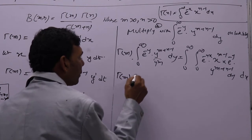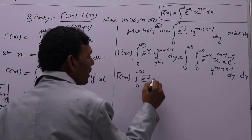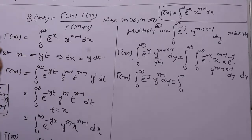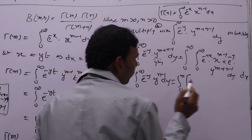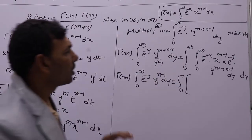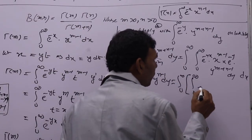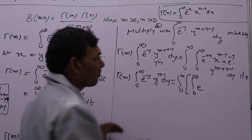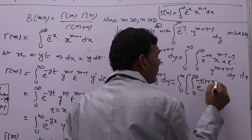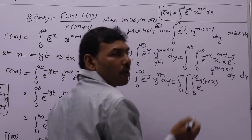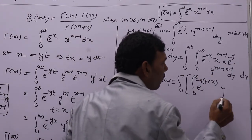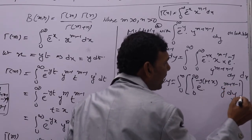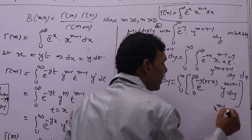Now here, gamma(m) into integral 0 to infinity, e to the power minus y into y to the power n minus 1 dy equals integral 0 to infinity. I am integrating with respect to y first, keeping y terms only. So e to the power minus yx minus y — taking minus y common gives 1 plus x — into y power m plus n minus 1 dy. At the end, x power m minus 1 dx.